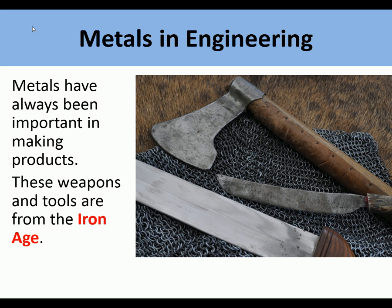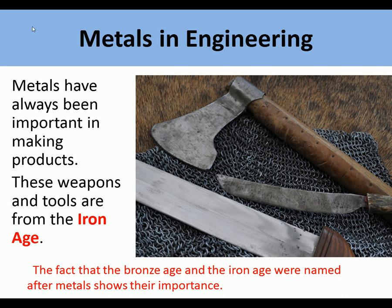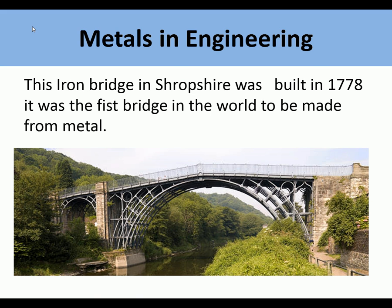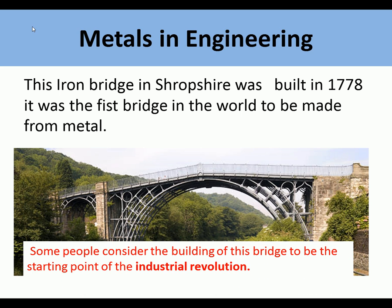Metals have always been important in making products. These weapons and tools are from the Iron Age, and the fact that the Bronze Age and Iron Age were named after metals shows their importance to society and to the manufacture of products. This iron bridge in Shropshire was built in 1778 and it was the first bridge in the world to be made from metal. Some people consider the building of this bridge to be the starting point of the Industrial Revolution.